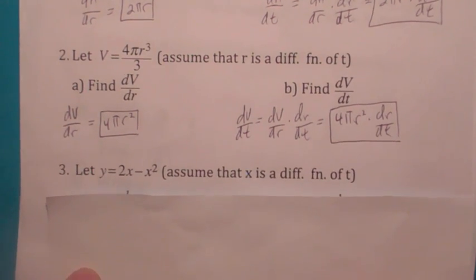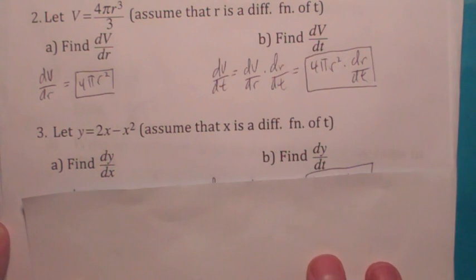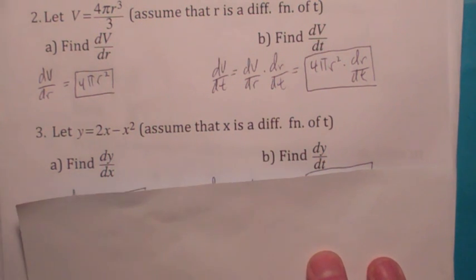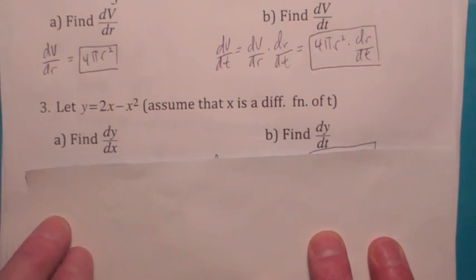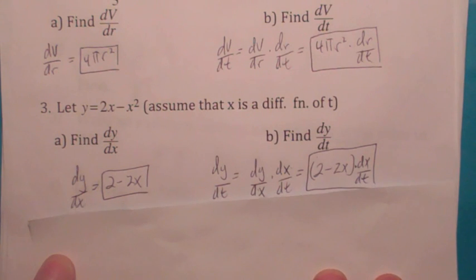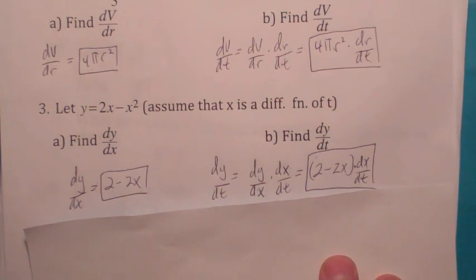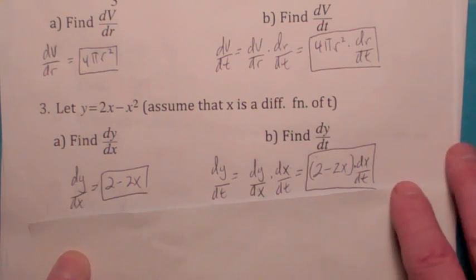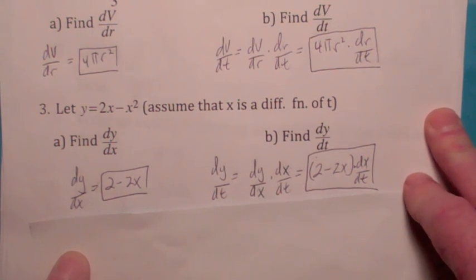Same thing here. Do you know the difference between dy/dx and dy/dt? dy/dx is just 2 minus 2x. But dy/dt, you have to multiply by the derivative of what's inside with respect to t by the chain rule. So that's why you get the dx/dt on there.